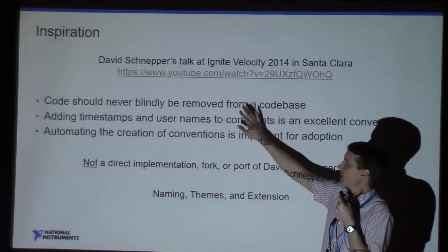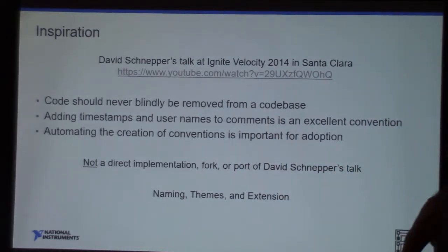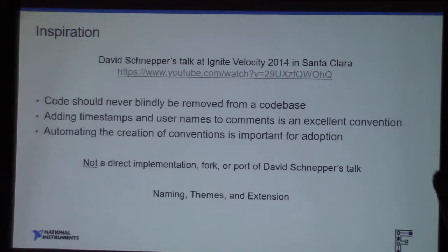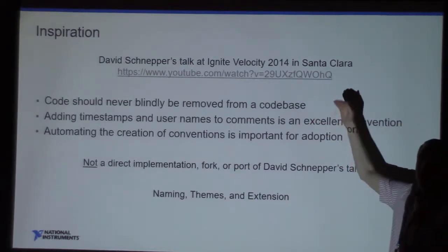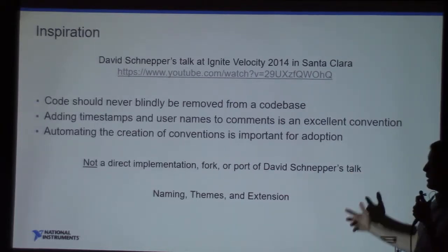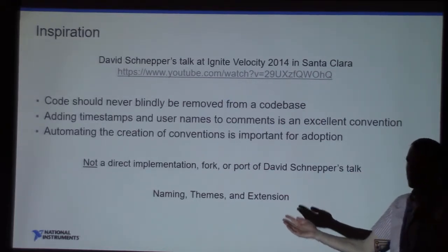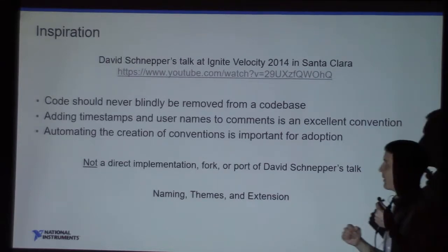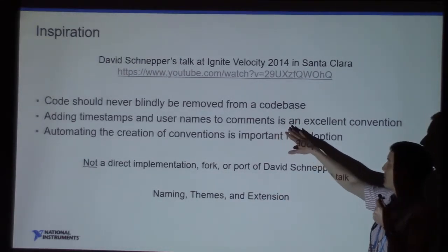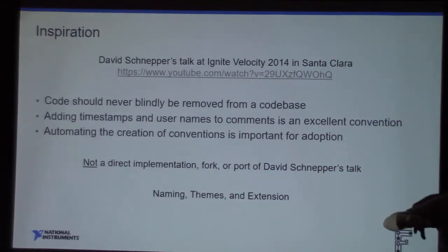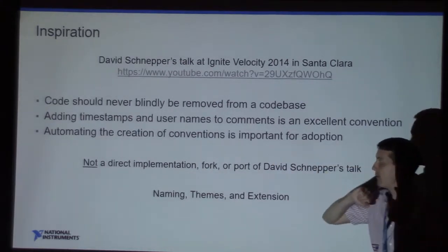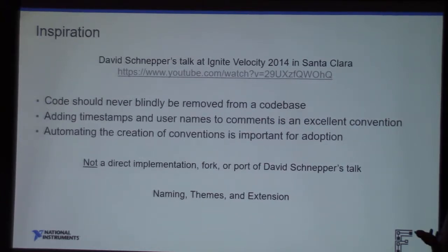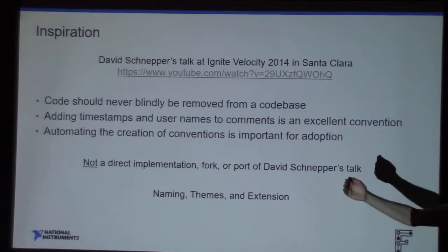One key idea is that code should never just blindly be removed. We're all engineers and scientists looking at data — we should apply that to our software as well and have evidence to support the removal of code. If we blindly remove code, we introduce bugs and lose behavior. He also introduced the idea of timestamps and usernames — an excellent convention to provide that evidence. And the third bullet: if we can automate all this, it makes refactoring easier and you can make it a habit, eventually reaching the goal of clean code.